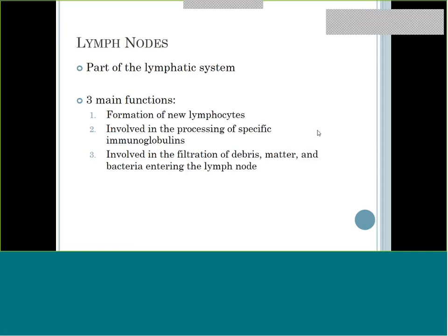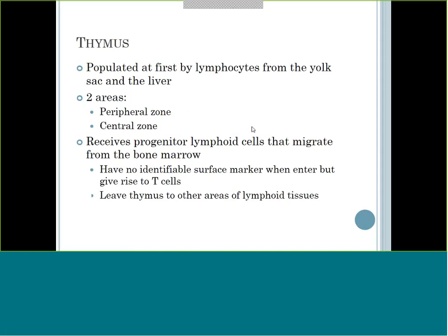The thymus is specifically for T lymphocytes. It will receive lymphoid cells that migrate from the bone marrow. These really young lymphoid cells come from the bone marrow to the thymus, and when they're in the thymus they're going to become immature T cells - T for thymus. They specifically become a T lymphocyte and then play a big role in our immune system. When you get into immunology, you'll learn more about the T cell role.